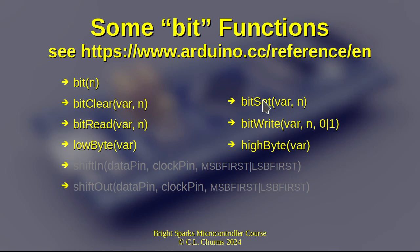Then we have bitRead — given a variable and a bit number, it returns the value of that bit. If the fifth bit is zero, the answer is zero; if it's one, the answer is one. Similarly, bitWrite takes a variable and a bit number, and you can put either a zero or a one there — setting it to zero or one. BitWrite is effectively a combination of bitClear and bitSet.